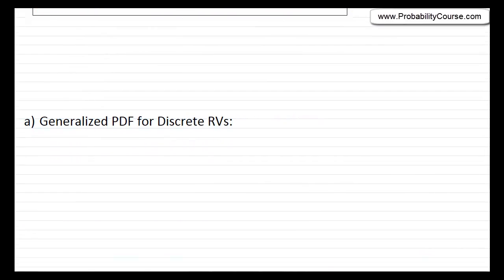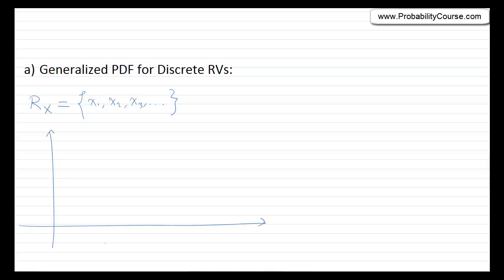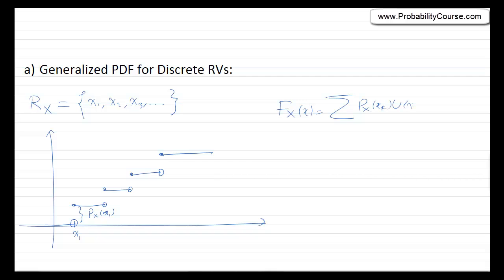So, let's start with discrete random variables. A discrete random variable can have a range R_X like {x1, x2, x3} — these are the possible values. We saw that the CDF of this random variable has a staircase form: it goes from 0, jumps at x1 to some value, and so on. The value of each jump is the probability at that point. We can write the CDF F_X(x) as the sum of p_X(x_k) times u(x minus x_k), where u is the unit step function.